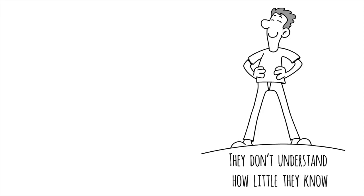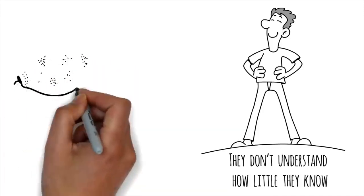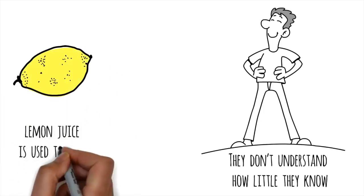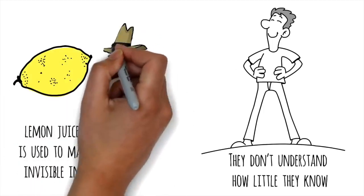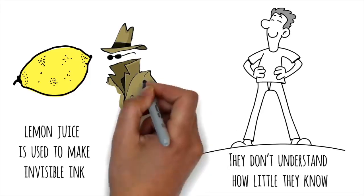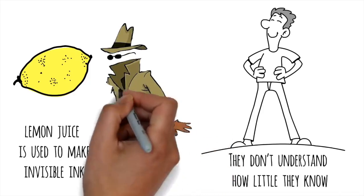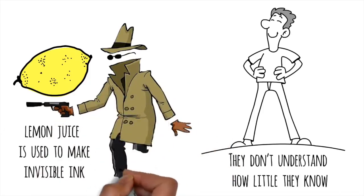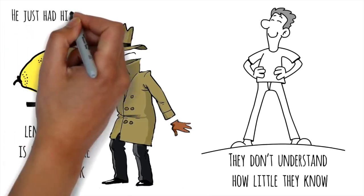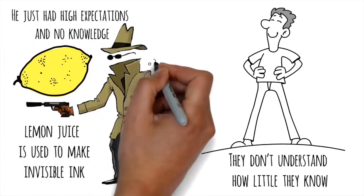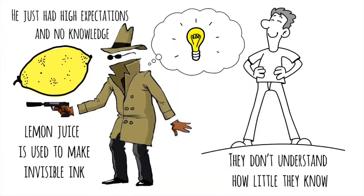Just look at the man who inspired Dunning and Kruger's original experiment. He decided to put lemon juice on his face in order to rob banks. Since lemon juice is used to make invisible ink, he believed he was completely invisible to the bank's cameras. Of course, that wasn't true. He just had high expectations and no knowledge, so he thought of himself as a genius.